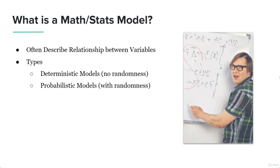Let's talk about the maths and stats model. They're often used to describe relationships between variables. There are basically different types of maths and stats models — we're going to divide them into two types. First, there are deterministic models, and secondly, there are probabilistic models.